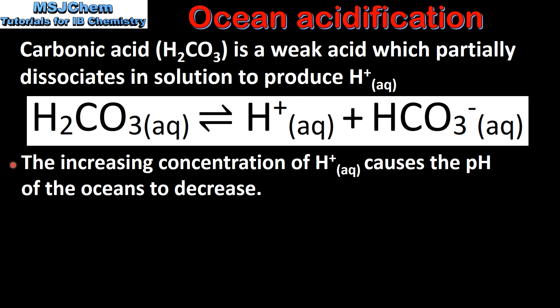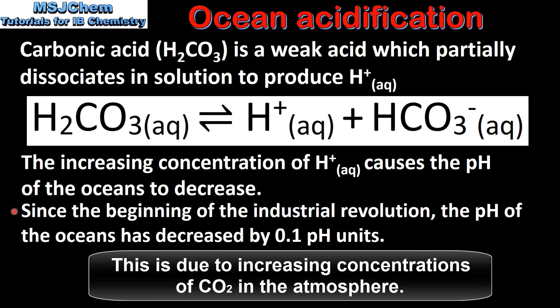The increasing concentration of hydrogen ions causes the pH of the oceans to decrease. In a previous video we saw that pH equals the negative log of the hydrogen ion concentration. Since the beginning of the industrial revolution, the pH of the oceans has decreased by 0.1 pH units.